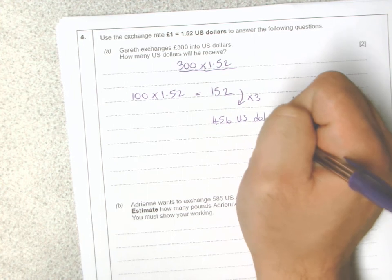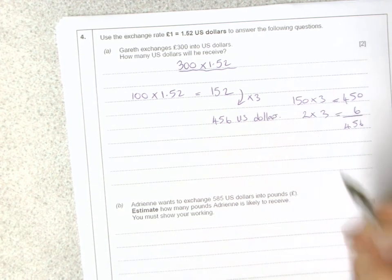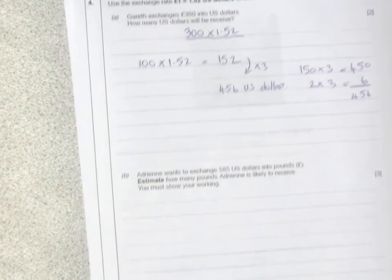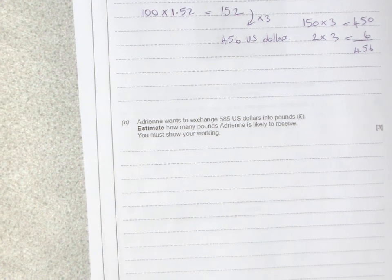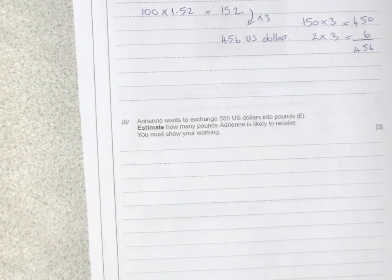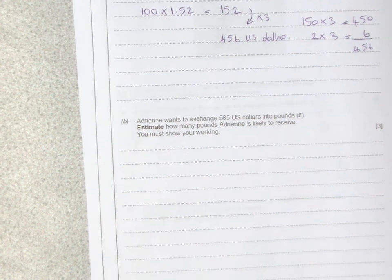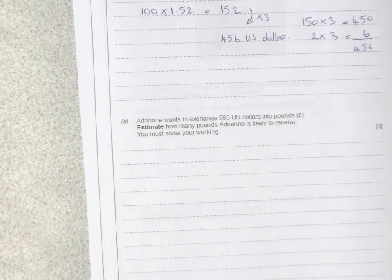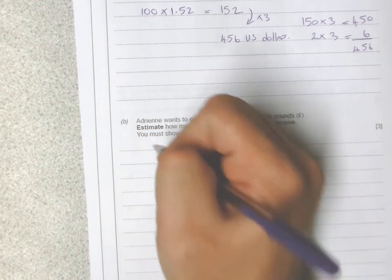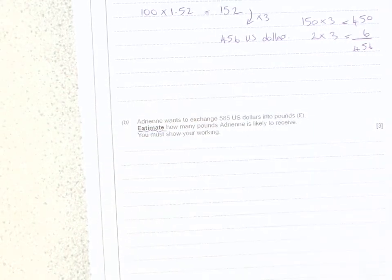Part (b): Adrian wants to exchange 585 US dollars into pounds. Estimate how many pounds Adrian is likely to receive. It does say estimate—we can't obviously work this out exactly.